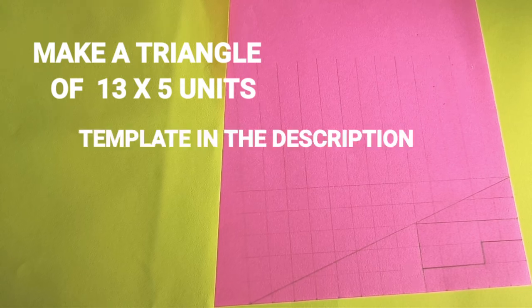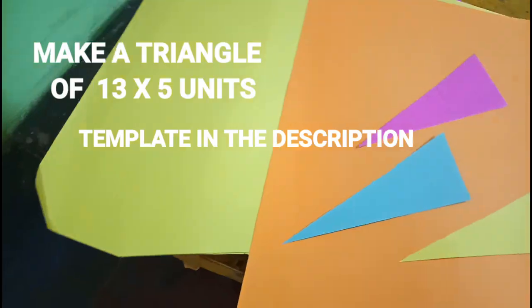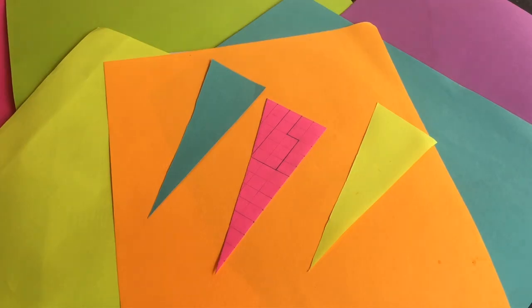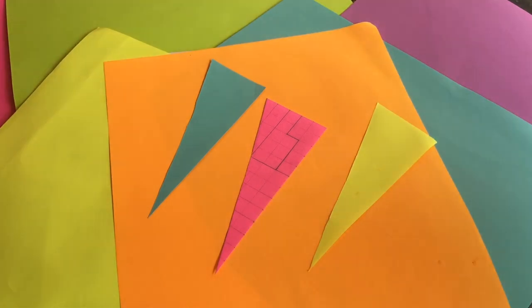Make a triangle of 13 by 15 units. Cut it out. You can choose from different colors.